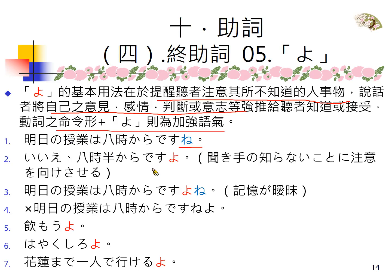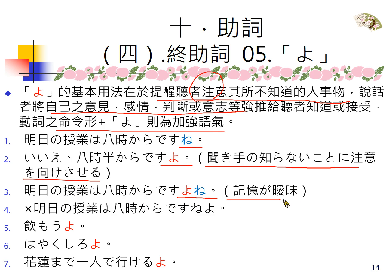好，这个是之前提到过的例子，我们再重复一下。「明日の授業は8時からですよ」，明天的课是从8点开始。「いや、8時半からですよ」，这是听者不知道的事情，我们让他注意，这是最基本的用法。另外重新一个对话，「明日の授業は8時からですよね」，记忆不明确的时候可以用よね；よね跟ね比，よね比较倾向于意见或记忆不明确；这两个重叠使用时不可以颠倒。